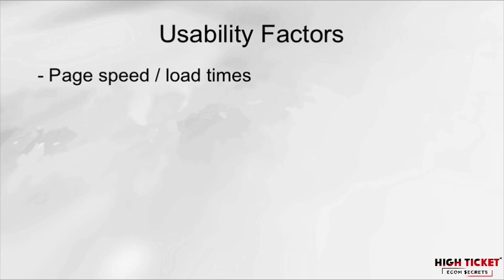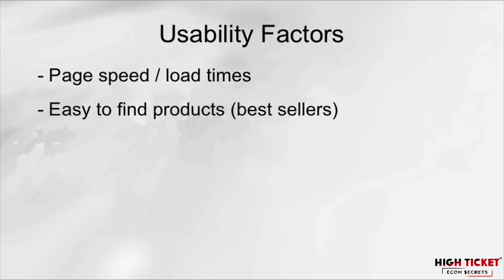Another usability factor is making sure you have easy-to-find products and best sellers. Basically, we want to showcase our products directly on the home page and make it easy for customers to find them. We don't want our best-selling products buried underneath sliders and images where you have to scroll three-quarters down the page to find them. We want them found very easily to give us the best chance for customers to actually see and click them to make the sale — that's ultimately what we're trying to accomplish.